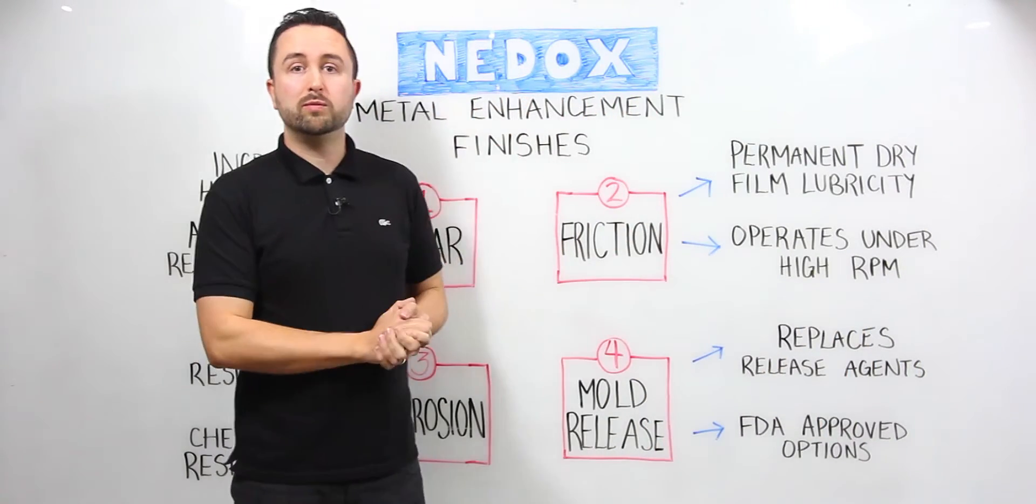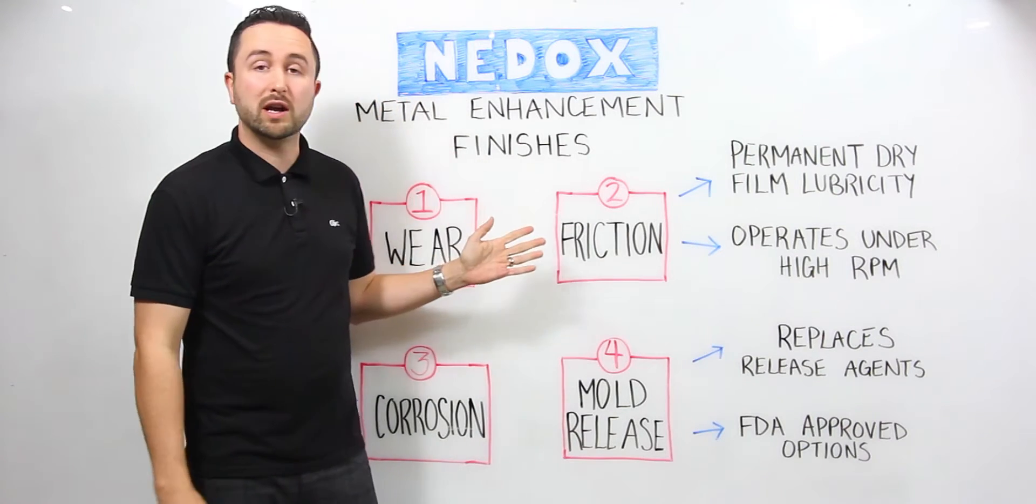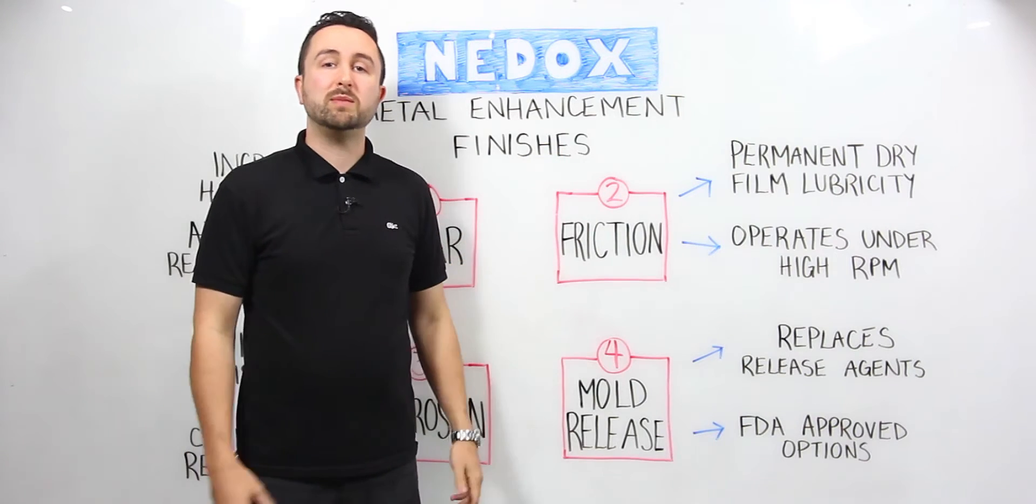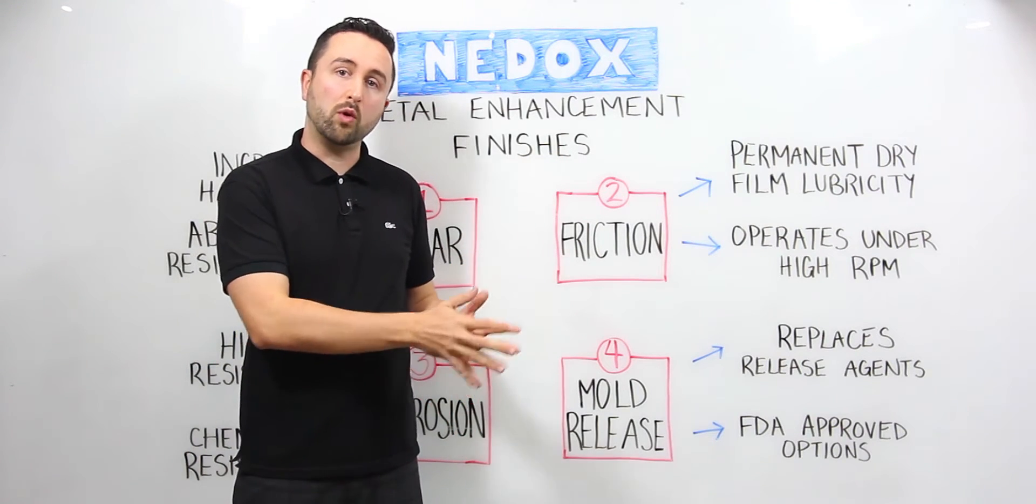Tying in with improvements in wear protection is friction reduction. We do this through a system of polymerization. Permanent dry film lubricity means that you do not have to apply any type of oils to the top of the part.